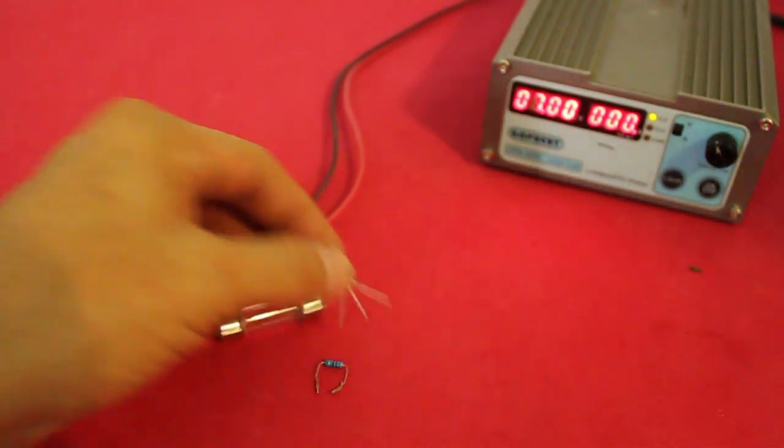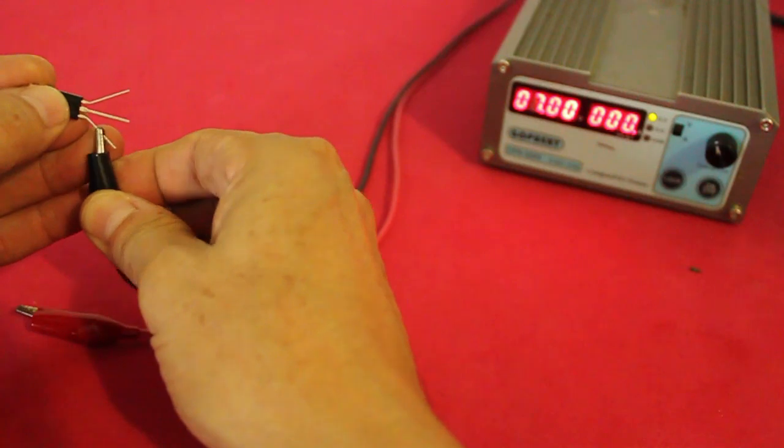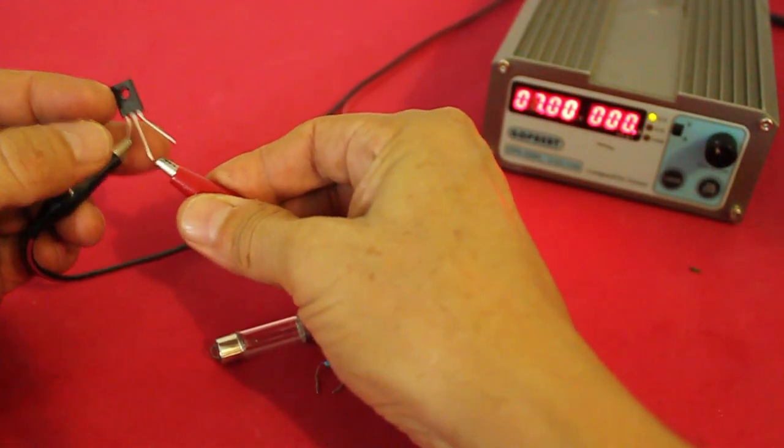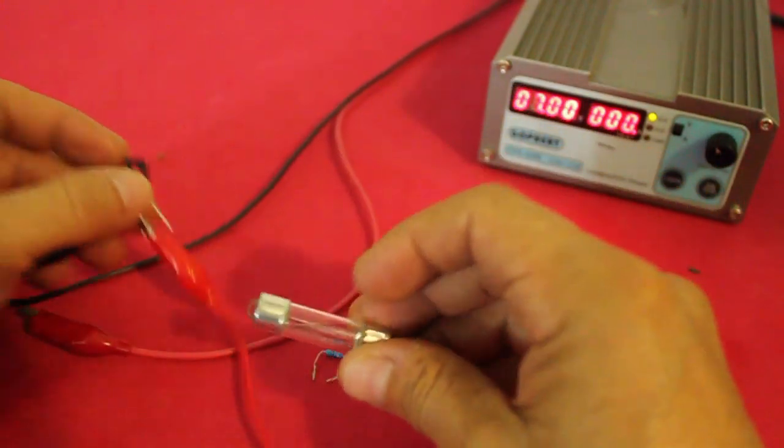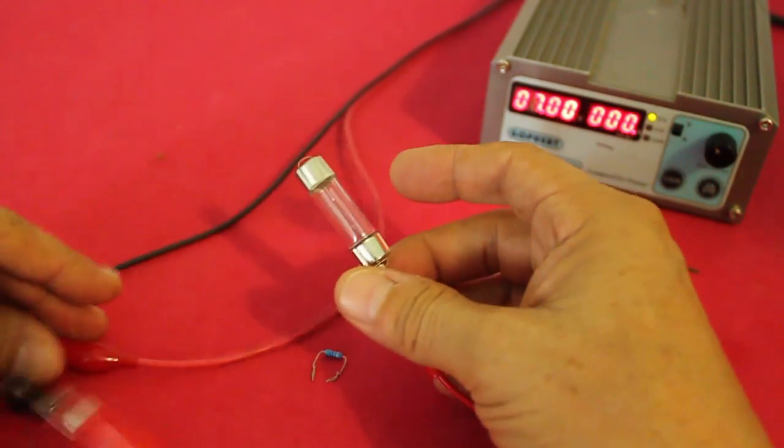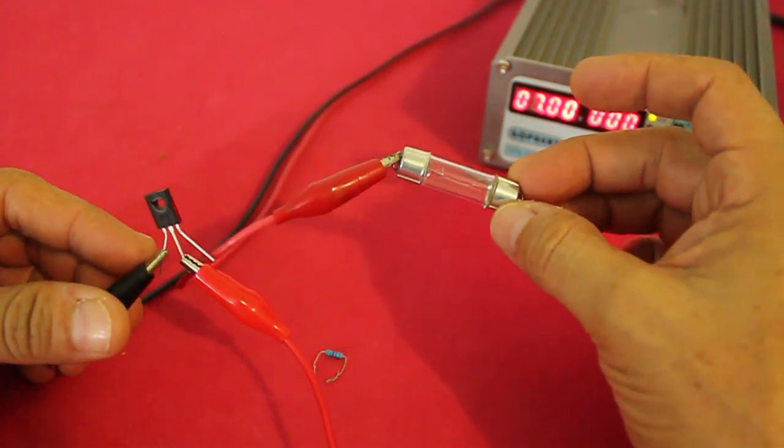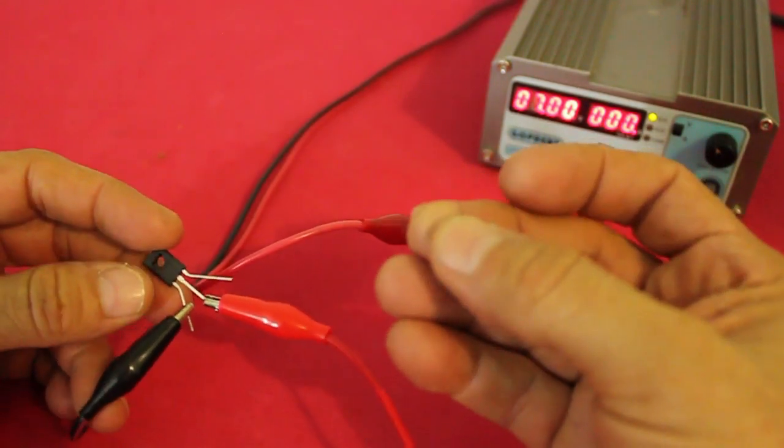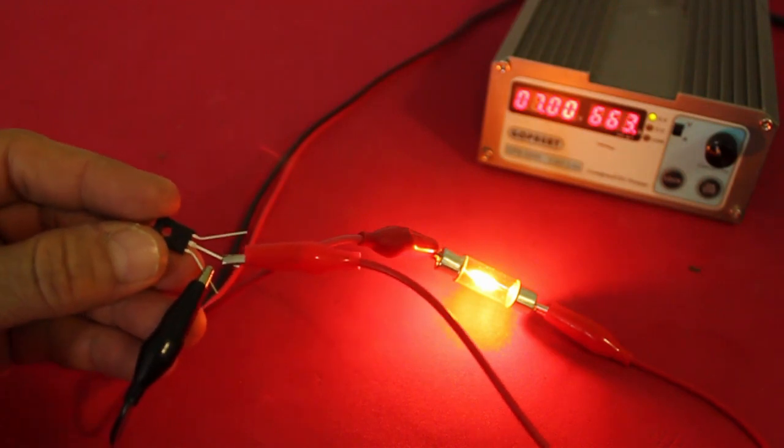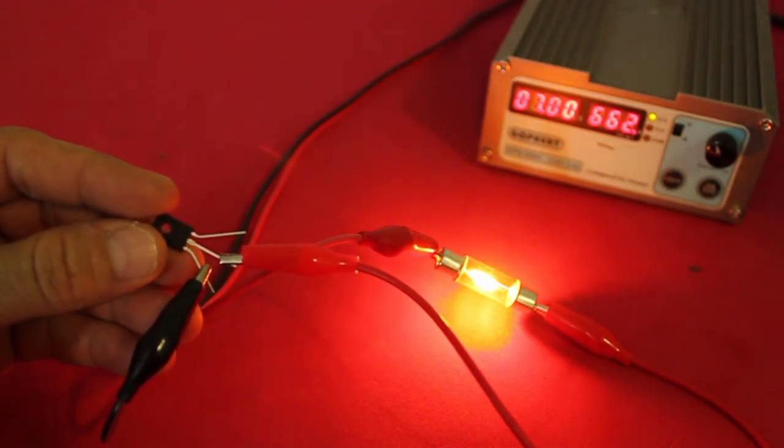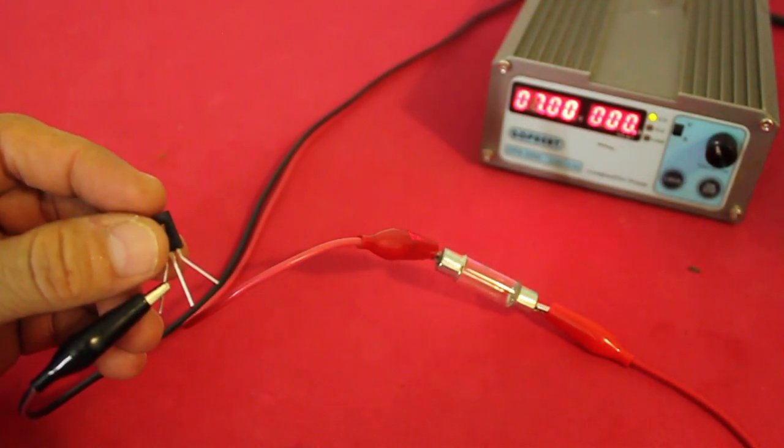Let's see. In this thyristor we have cathode, anode and gate. So we connect the negative of the power supply to the cathode, then the anode. The anode is connected to the load which is this small lamp, and the other side of the lamp to the positive of the power supply. You can see that the lamp is not turned on. Now we take a resistor and apply a voltage from positive to the gate, and now the lamp is on. And note that the gate is not connected to positive. In order to turn off the lamp we have to disconnect the power and the lamp goes off.